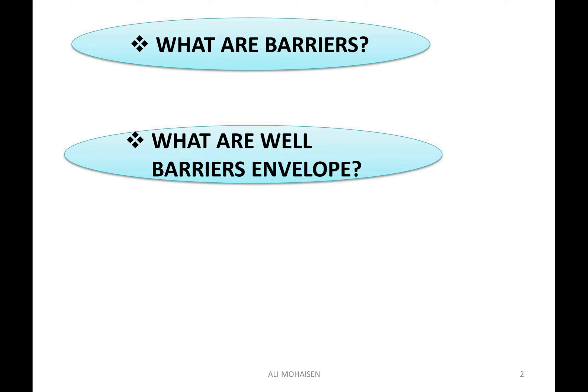ما هو Well Barrier Envelope؟ تعريف Well Barrier Envelope يعني أنه مزيج من واحد أو أكثر من الـ well barrier elements — من عناصر الـ barriers اللي تشكّل معاً طريقة لاحتواء السوائل داخل البئر، واللي تمنع السوائل غير المسيطر عليها من الدخول إلى تكوين آخر أو الهروب إلى السطح.